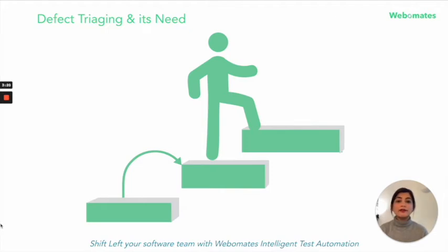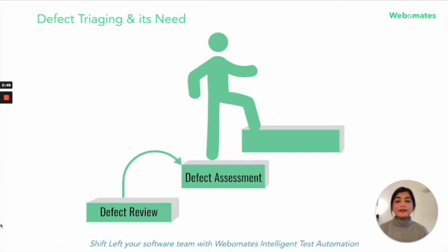Now how does defect triaging work? The QA team evaluates the defects, assesses them, and attaches priorities and severity levels. Priorities correspond to business perspective and severity corresponds to technicalities. Factors to be considered while evaluating and prioritizing the defects are the validity of the defect, time sensitivity for resolution, the complexity involved in resolution, and business impact.